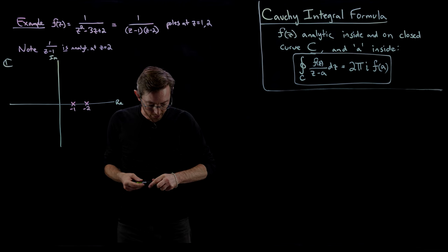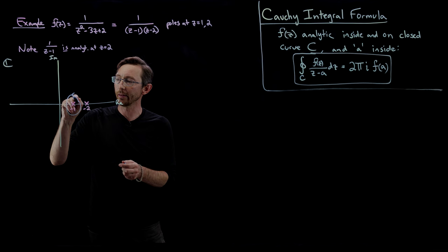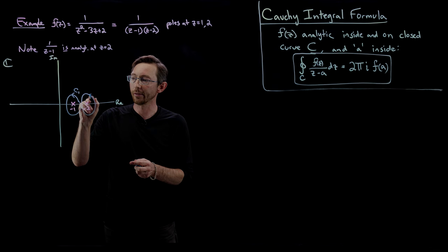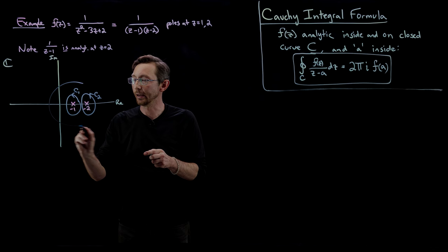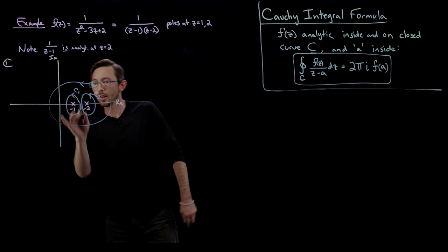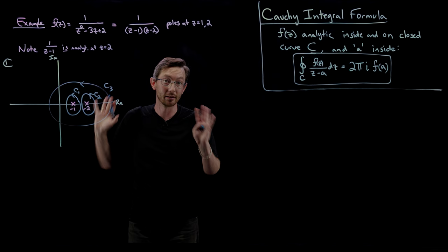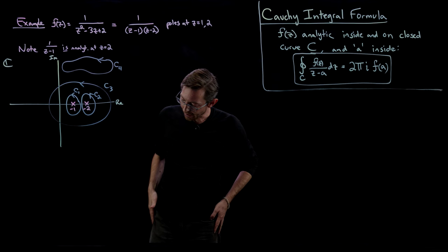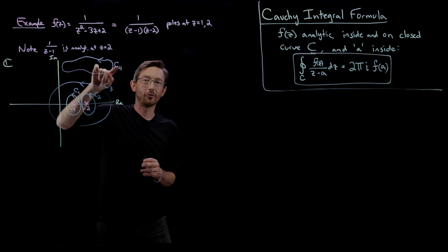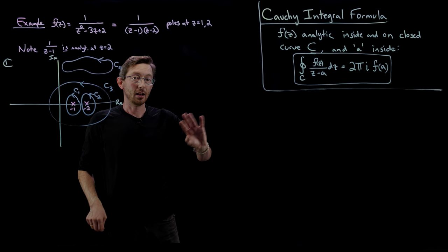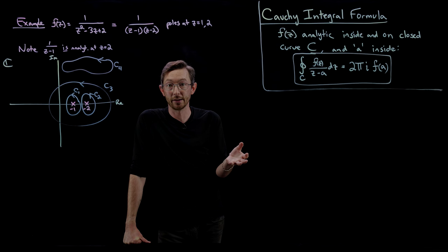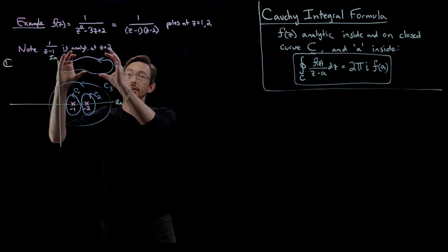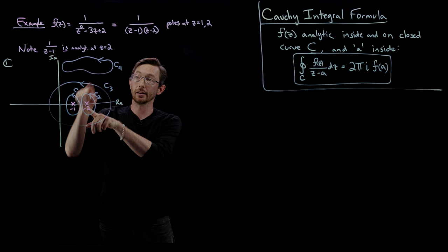The first contour integral I'll do is a contour around z equals one — we'll call that contour one. I'll do a contour integral around z equals two — contour two. Contour three is going to surround both of these singularities. And then contour four doesn't include either of those singularities. Now, the integral around contour four is going to equal zero, because that was the original Cauchy-Goursat theorem for analytic functions. This function f of z is actually analytic inside contour four, so the integral around that closed loop equals zero.